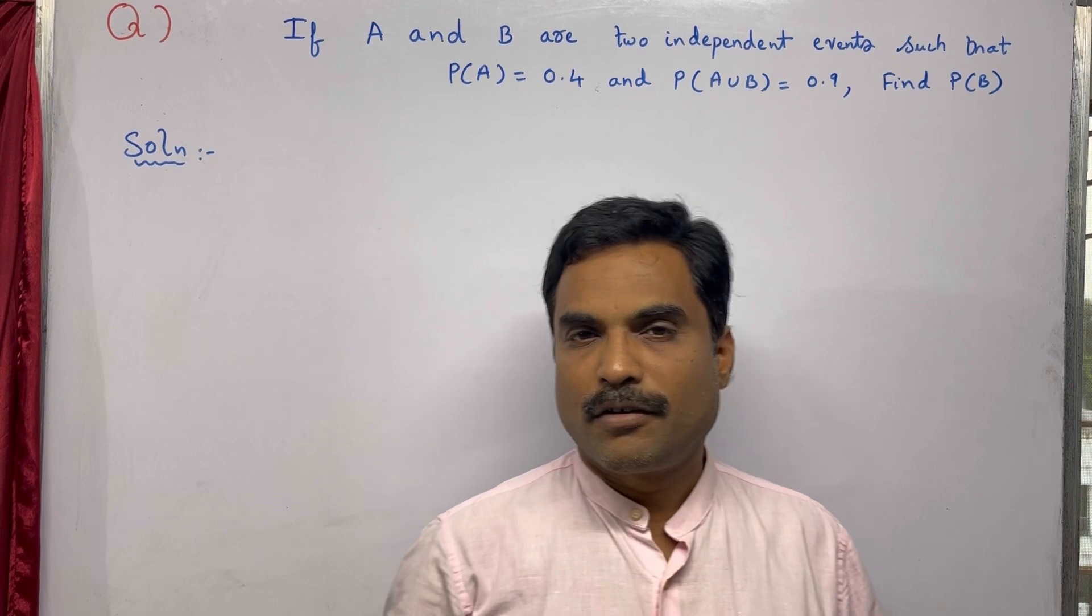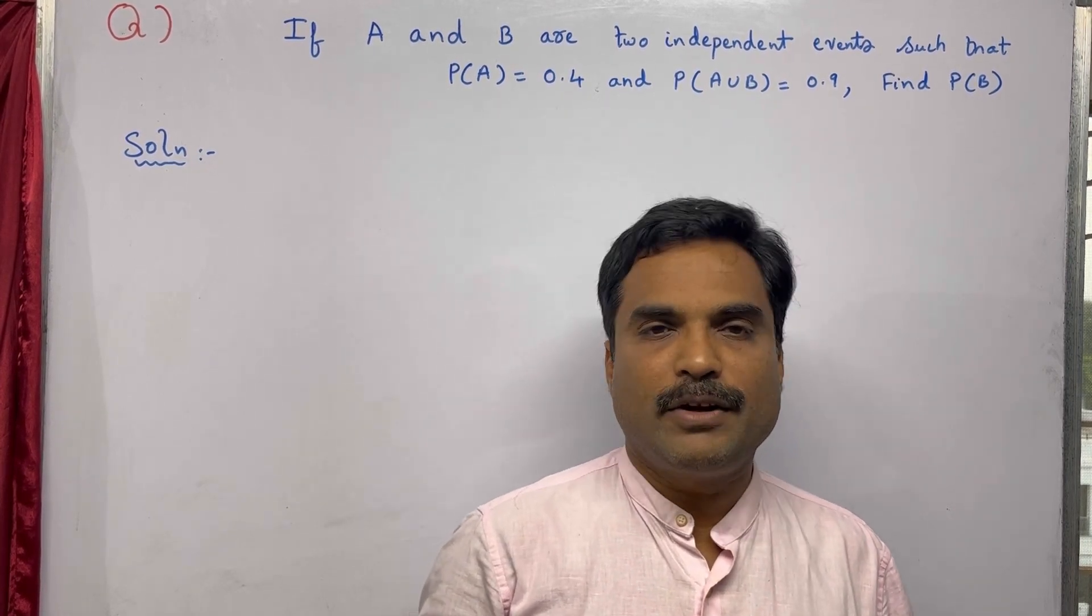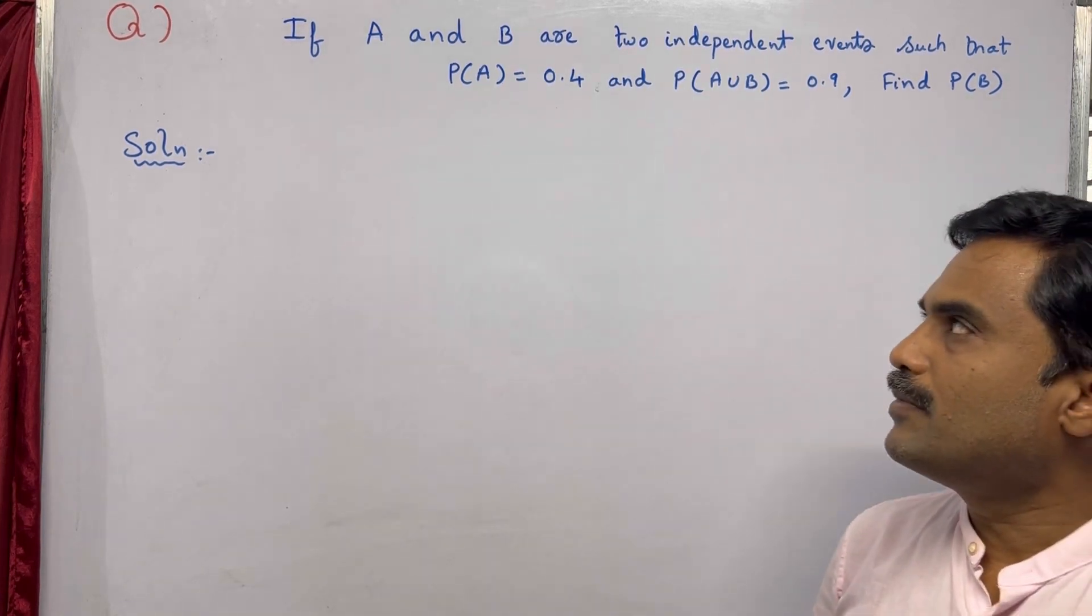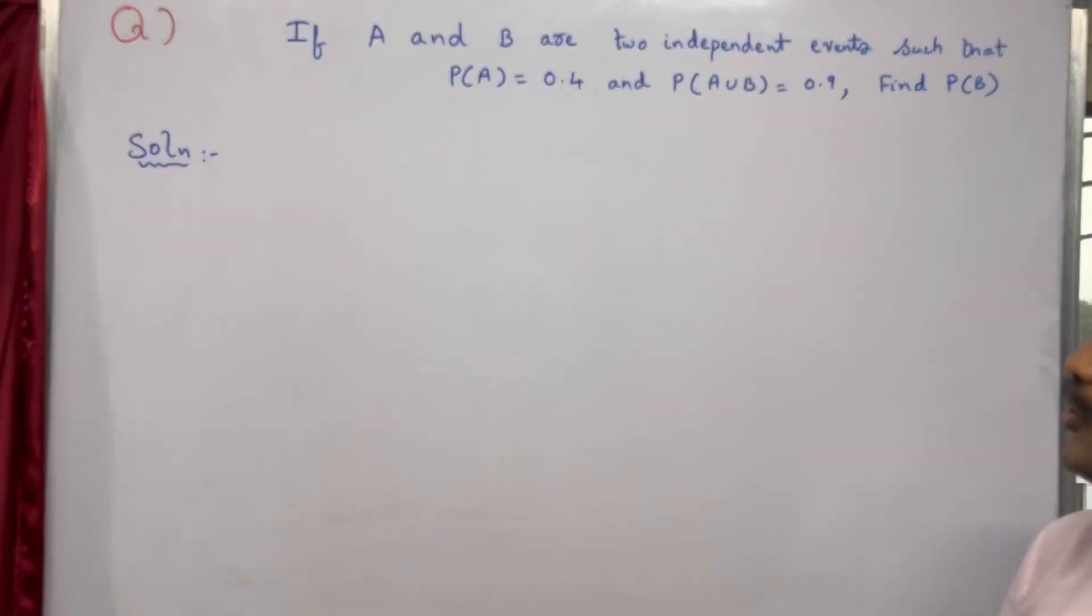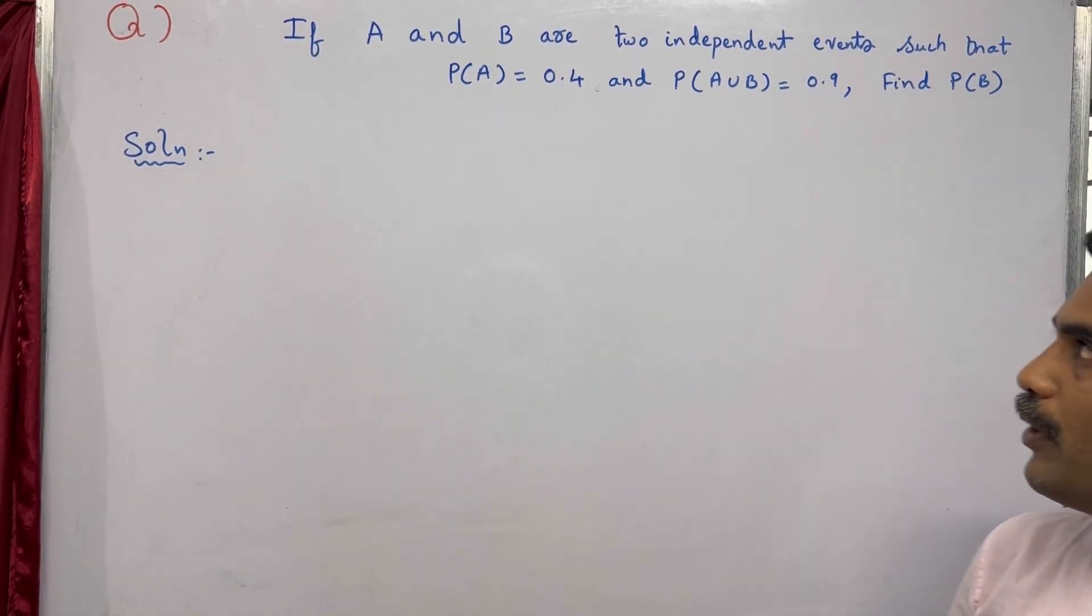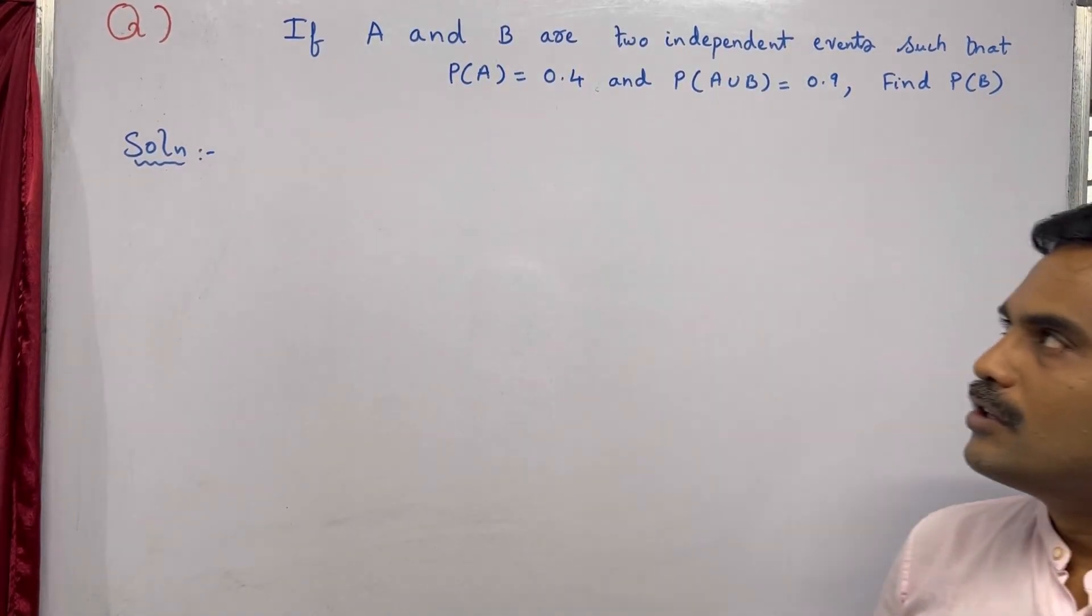Hi dear friends, welcome to my channel. In this new video I am going to solve a mathematical problem under the topic probability. The problem is: if A and B are two independent events such that P(A) equals 0.4 and P(A∪B) equals 0.9, find P(B).